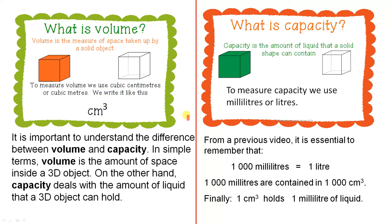It is important to understand the difference between volume and capacity. In simple terms, volume is the amount of space inside a 3D object. On the other hand, capacity deals with the amount of liquid that the 3D object can hold.